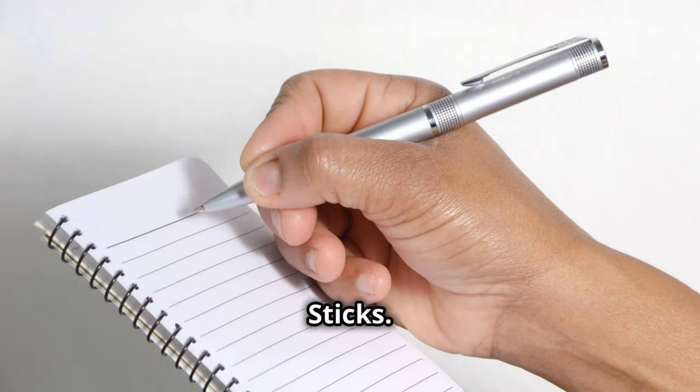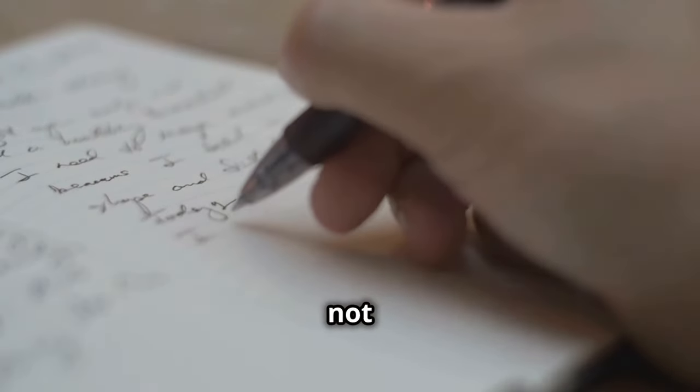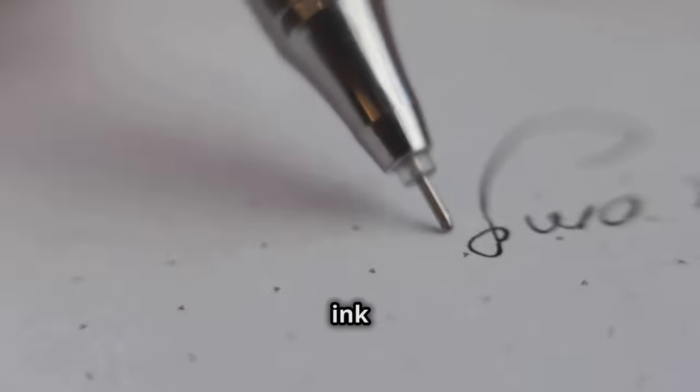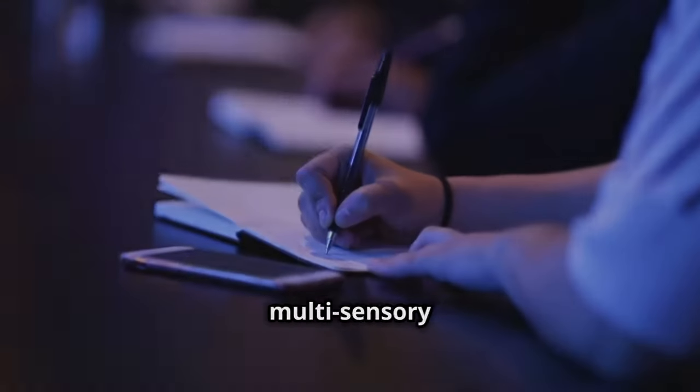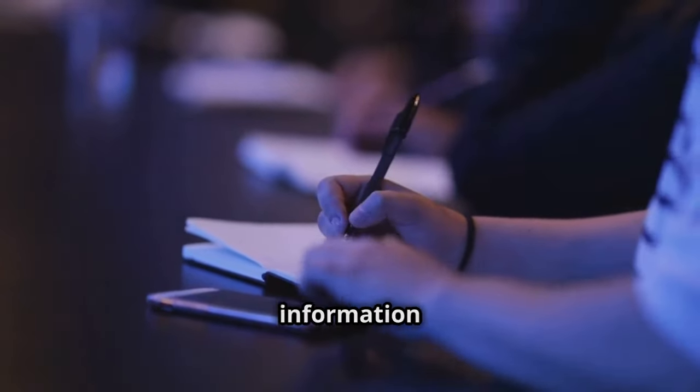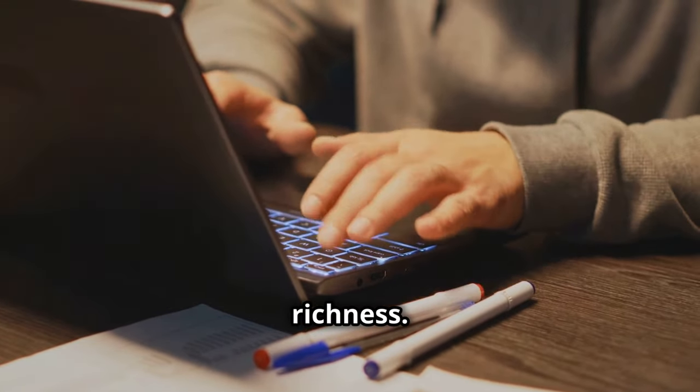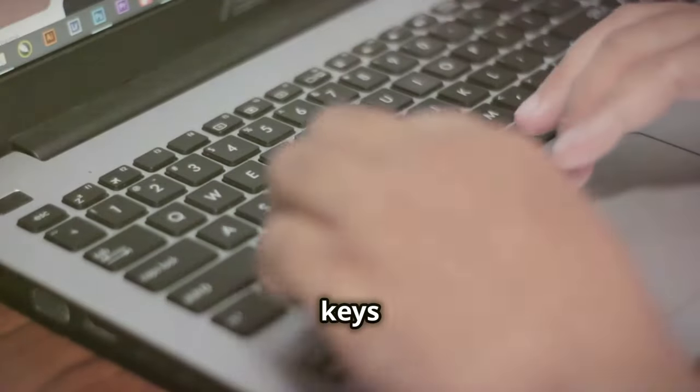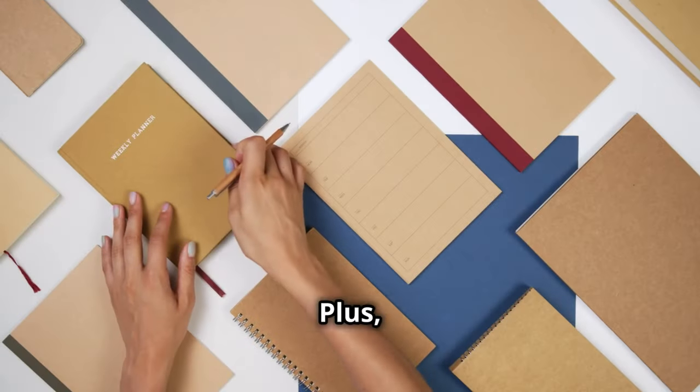So why does paper seem to have a leg up on digital when it comes to memory? It's all about engagement. When you write by hand, you're not just recording words - you're creating something tangible. You feel the texture of the paper, see the ink flow from your pen, and hear the gentle scratching sounds. This multi-sensory experience helps to cement the information in your mind. Digital note-taking, while convenient, often lacks this sensory richness. You're typing on smooth glass, staring at a screen, and the only sounds are the clicks of keys or the tap tap tap of your fingers. It's easy to get distracted by notifications or other apps.